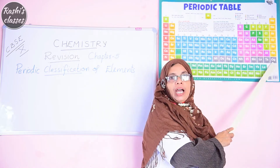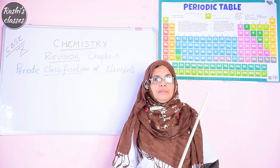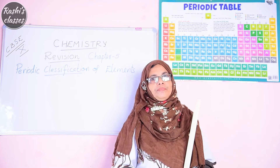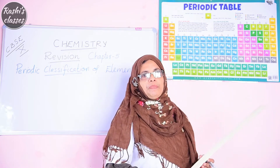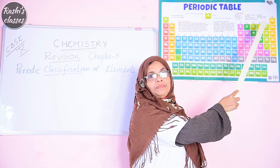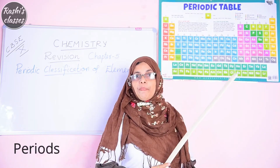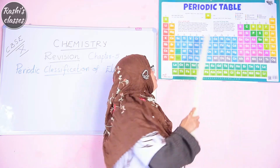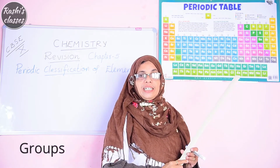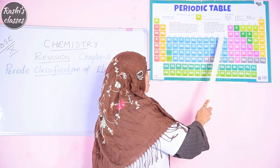The 118th element is Oganesson, and now the periodic table is complete. When we go through the periodic table, there are horizontal rows — seven horizontal rows called periods. Vertical columns are called groups, and there are 18 groups: the first group, second group, third group, and so on till the 18th group.